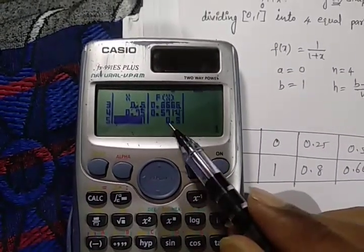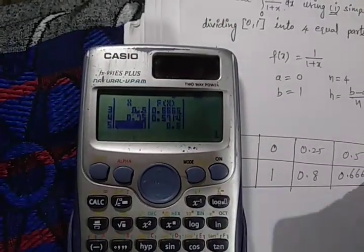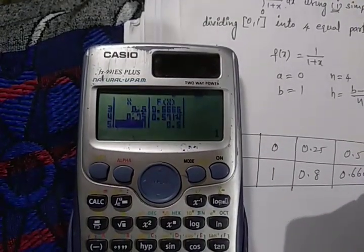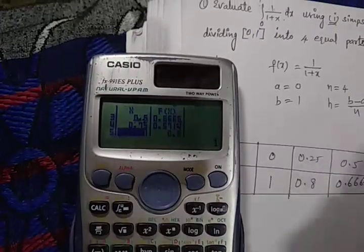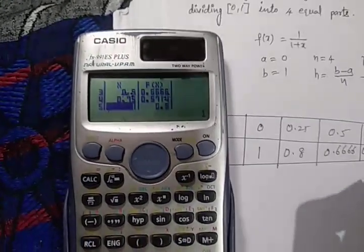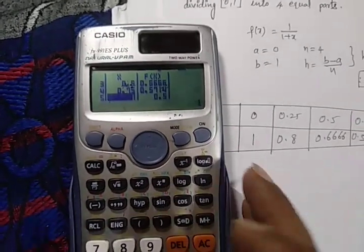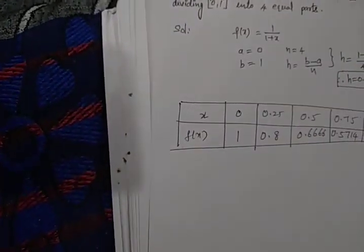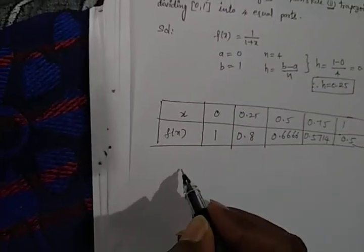When x = 0.75, f(x) = 0.5714. When x = 1 (the upper limit), f(x) = 0.5. Now apply Simpson's method.